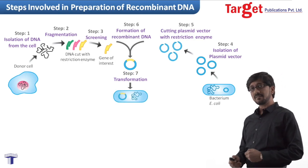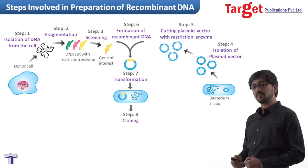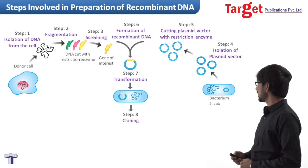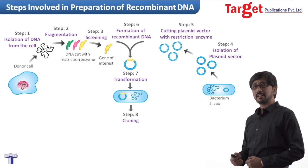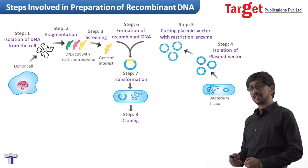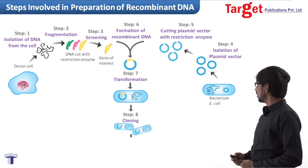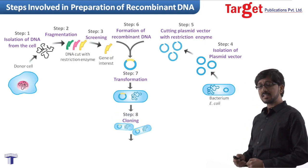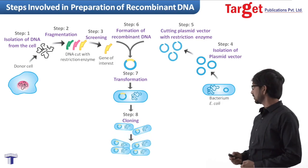After transformation, the next step is cloning. In cloning, we grow the bacteria in a nutrient medium. As the bacteria multiply, automatically our gene of interest is also getting multiplied.